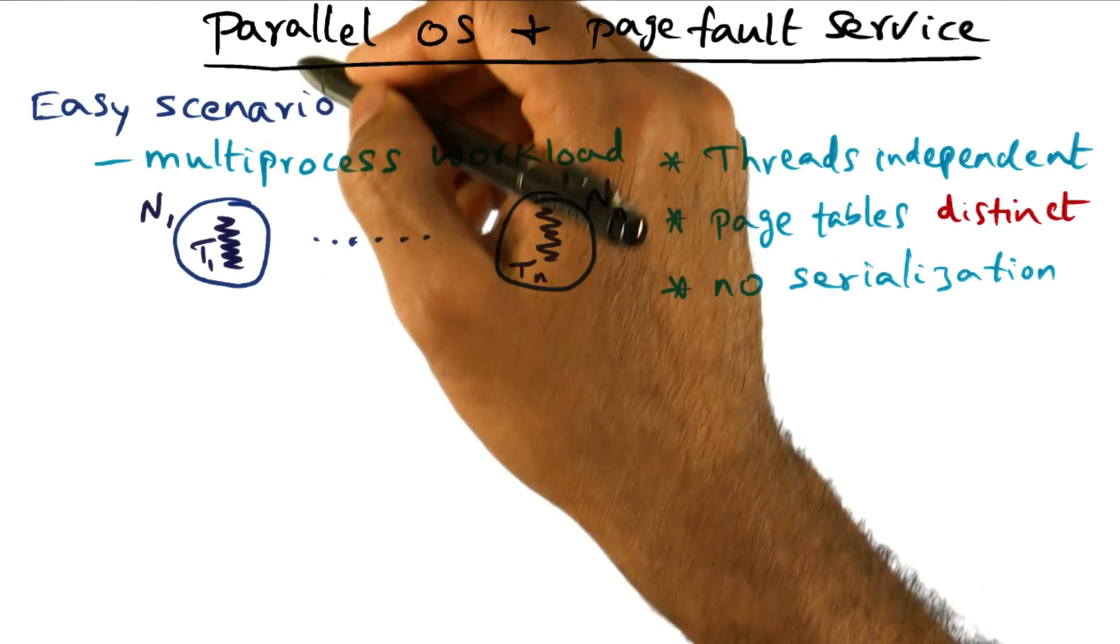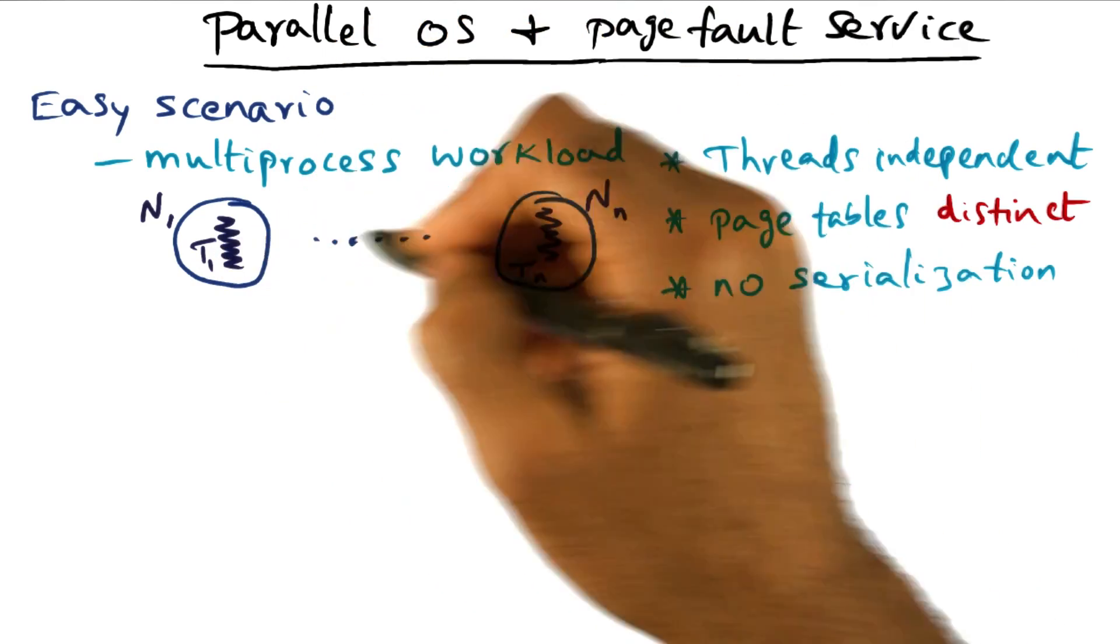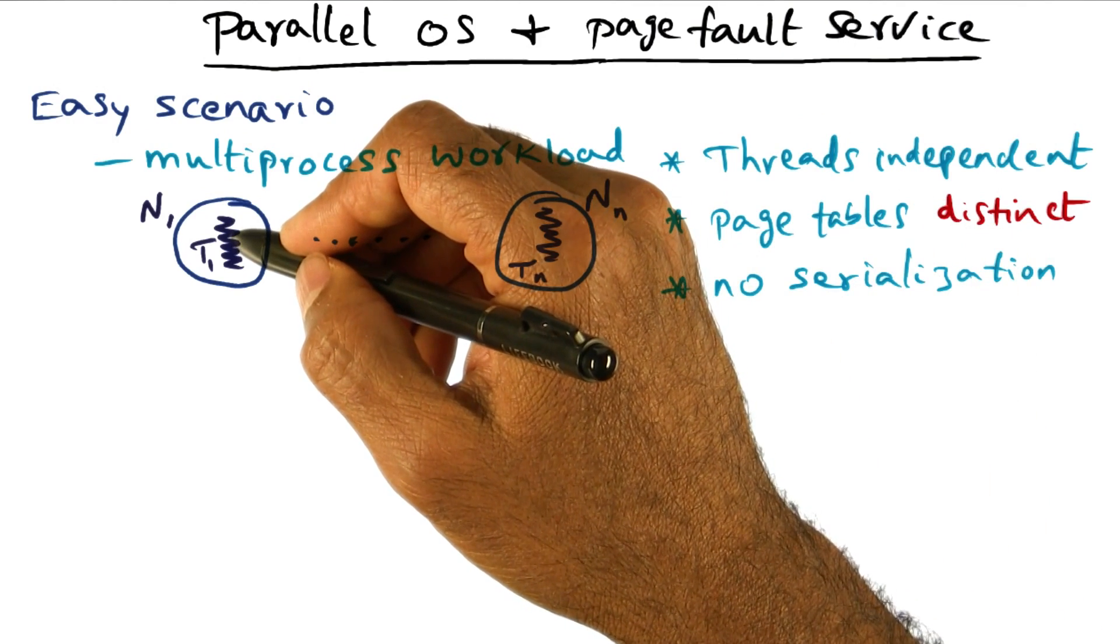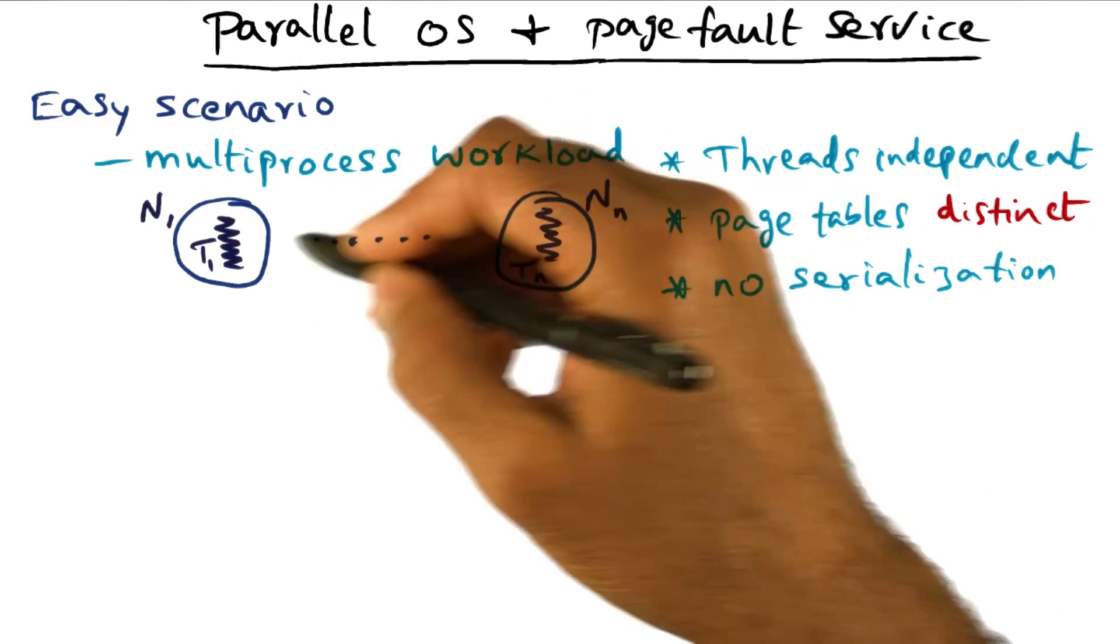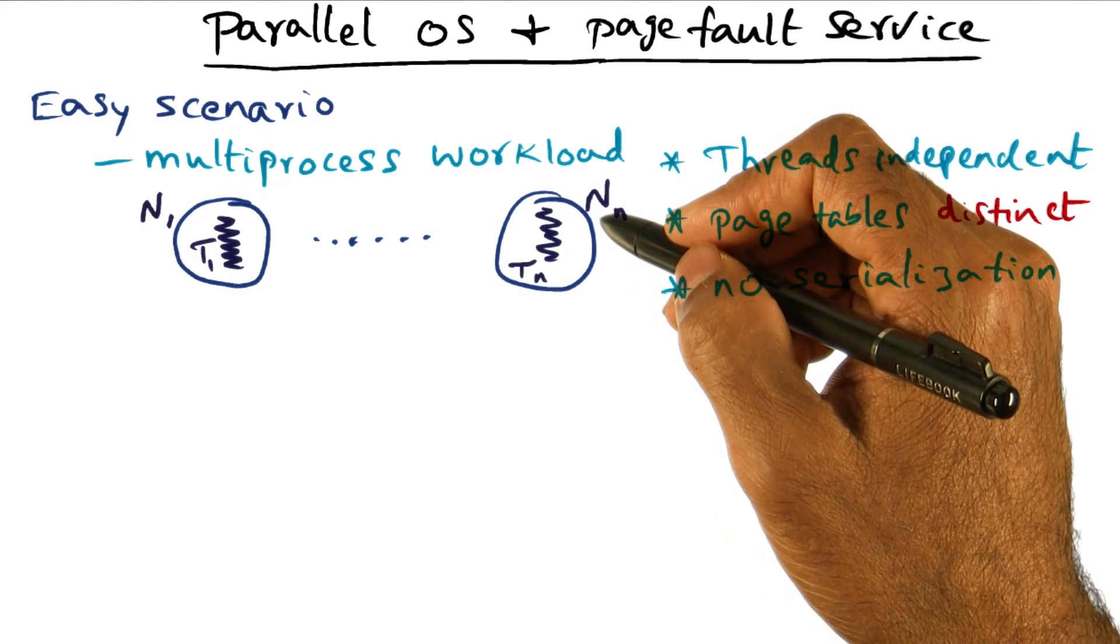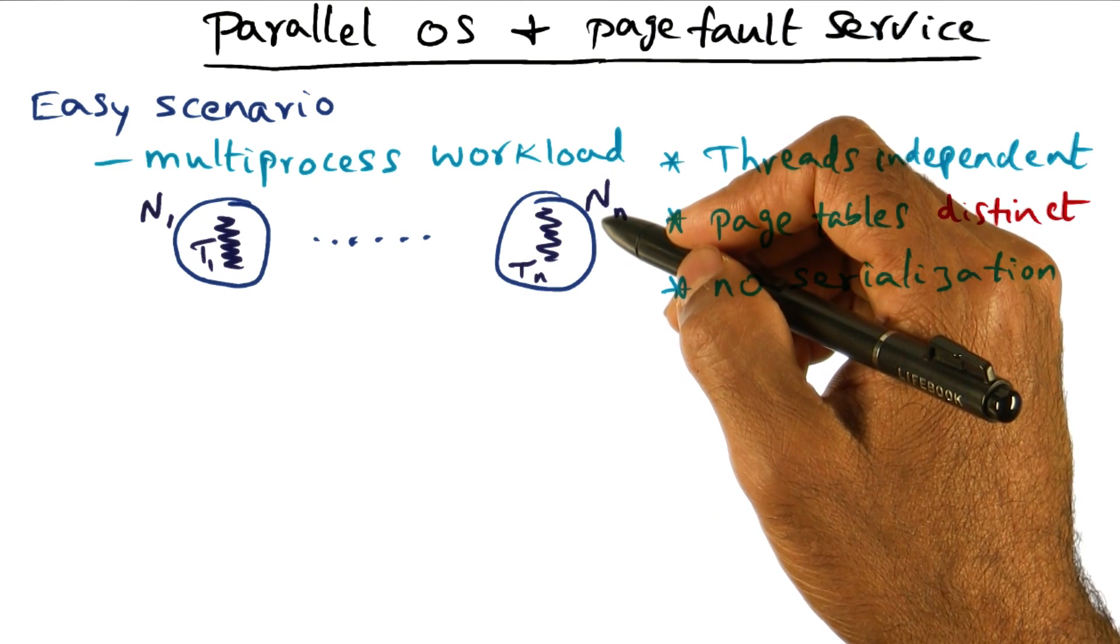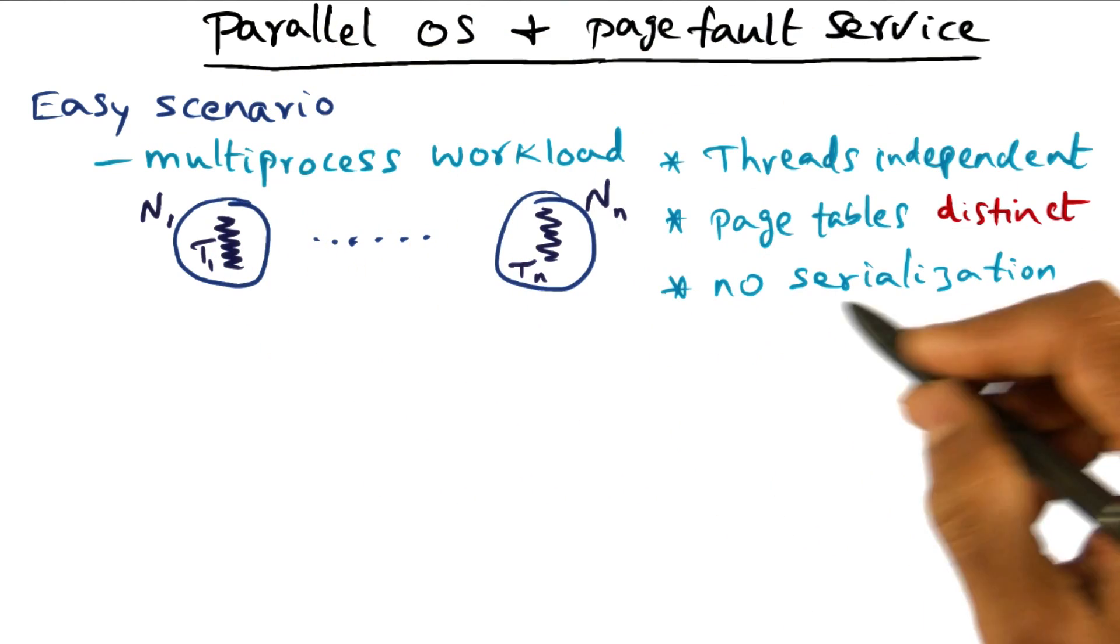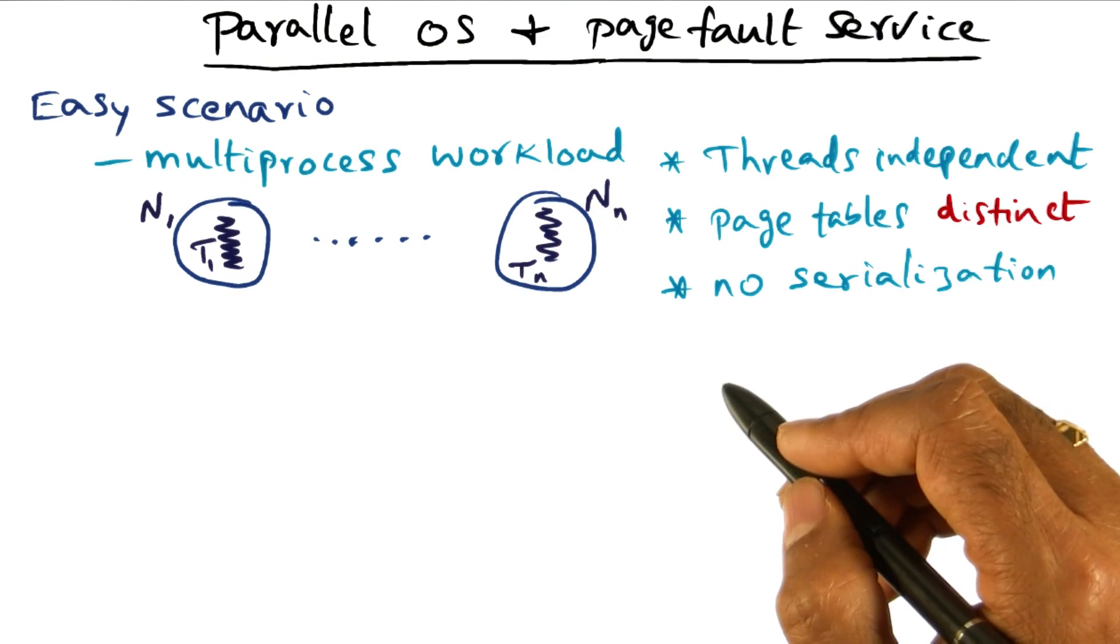As I told you, the parallel operating system is going to have a page fault handler available in each one of these nodes. So the work can be done in parallel, so long as there is no data structure shared among these different units of work. And so long as the page tables are distinct, which is the case in a multiprocess workload, there is no serialization and life will be good.